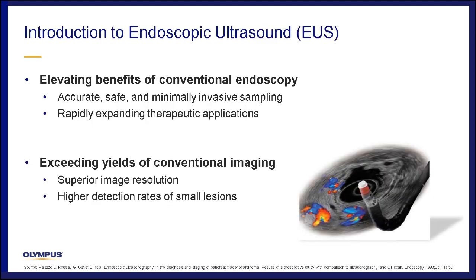For some of you this may be review; however for most of our audience this may be their first introduction to the technology of EOS. Conventional white light endoscopy only provides views of the most superficial lining of the digestive tract, while the addition of ultrasound affords visualization of all five layers of the GI tract as well as surrounding structures. This provides an additional benefit of accurate, safe, and minimally invasive sampling, with rapidly expanding therapeutic applications, making it an ideal alternative to exploratory and invasive surgeries.